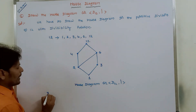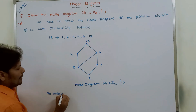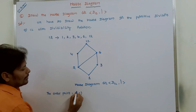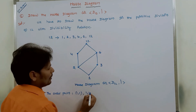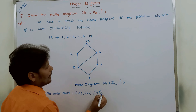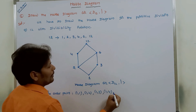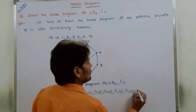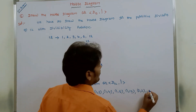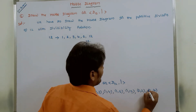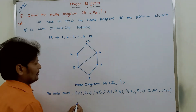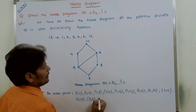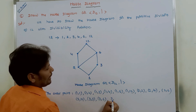Now, the ordered pairs we are getting: 1 divides 1, 1 divides 2, 1 divides 4, 1 divides 6, 1 divides 12. Next, 2 divides 2, 2 divides 4, 2 divides 6, 2 divides 12. Then, 3 divides 3, 3 divides 6, 3 divides 12.